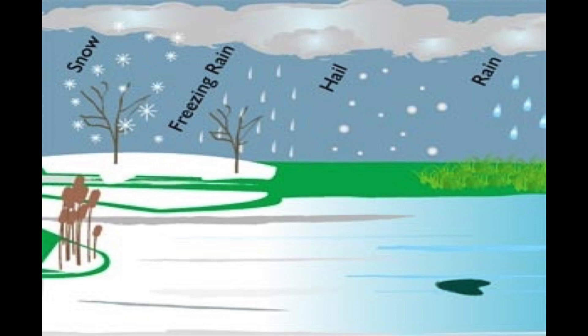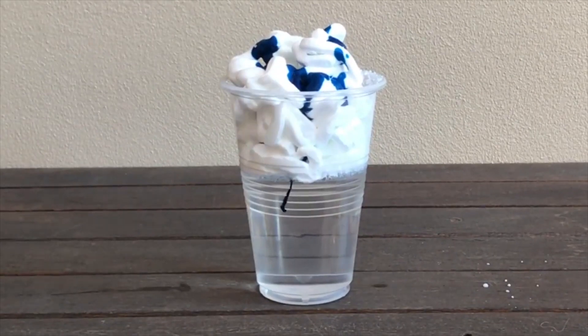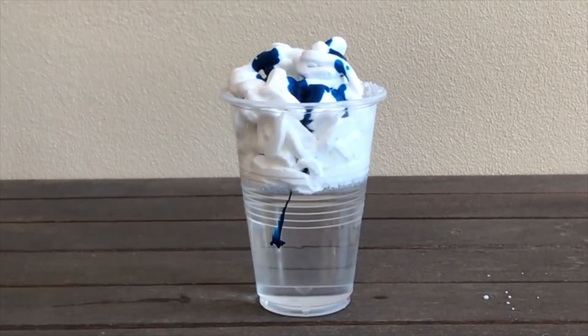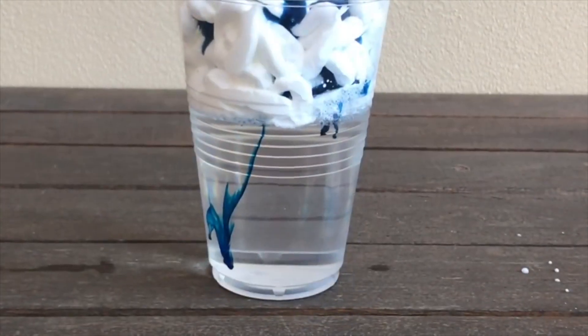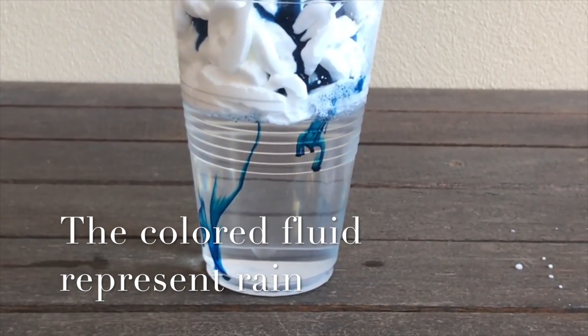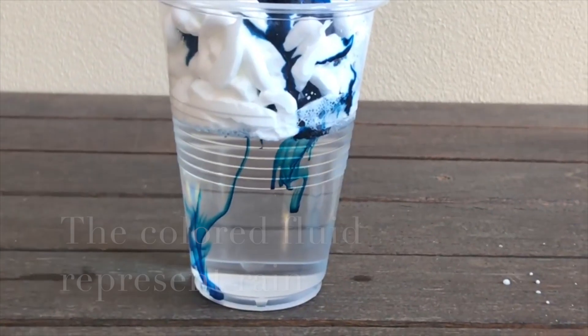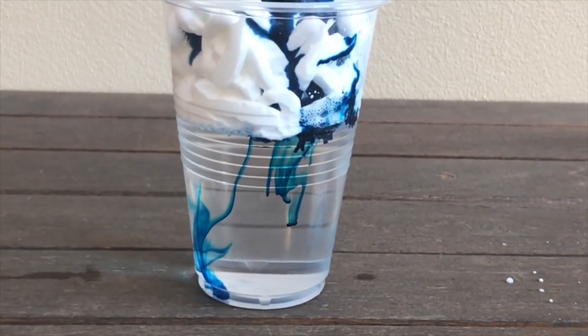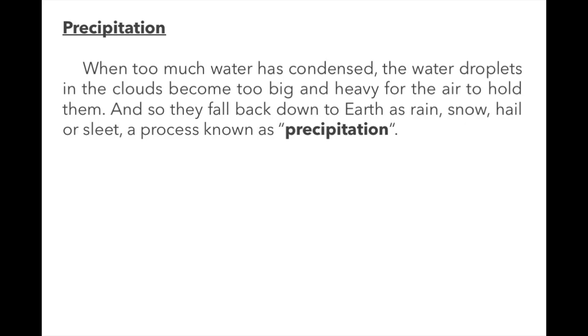When water droplets get heavy enough, they fall back down to earth as rain. We call this precipitation because it can happen in a few different ways like rain, snow, and hail. Precipitation brings the water back down to earth, and the cycle repeats.